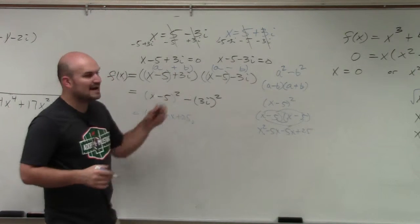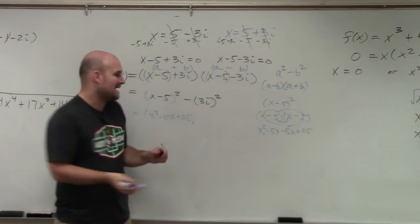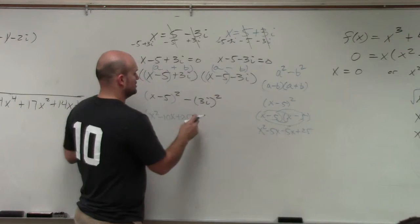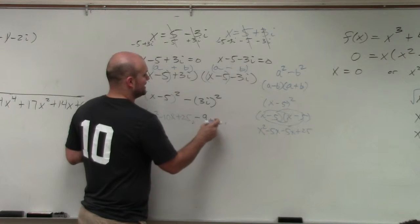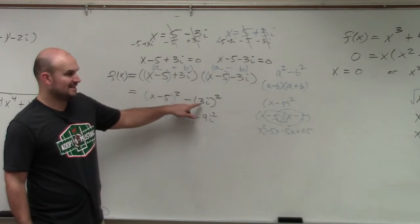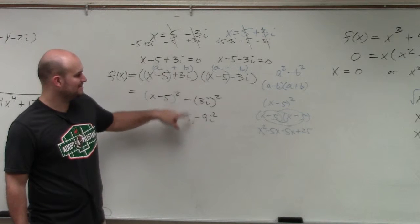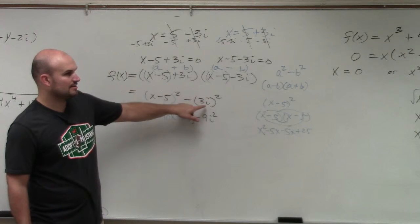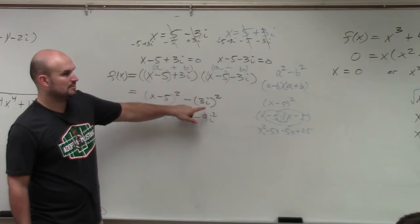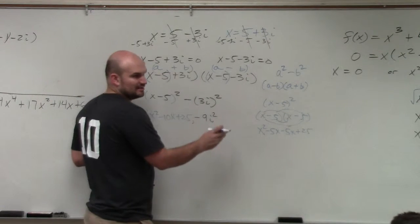Then 3i times 3i is going to be 3 times 3, which is 9, times i squared. So it's really minus 9i squared. 3i times... Well, eventually, we're going to get to that. No, it's going to be minus. That's 3i squared. Isn't i squared, that's negative 1? I know. I haven't finished it yet, though.